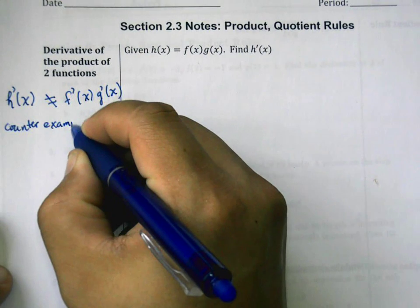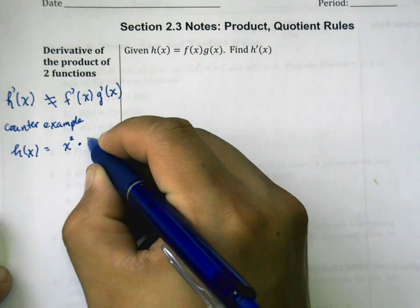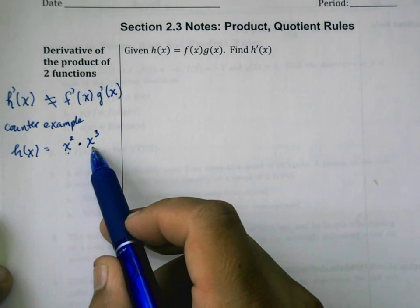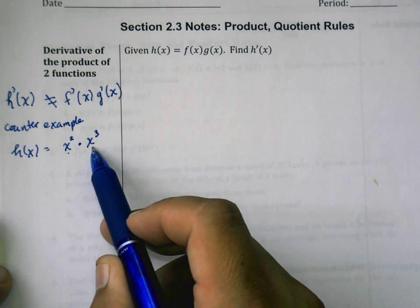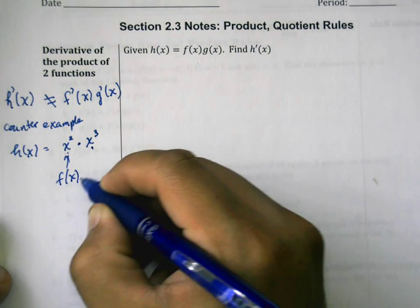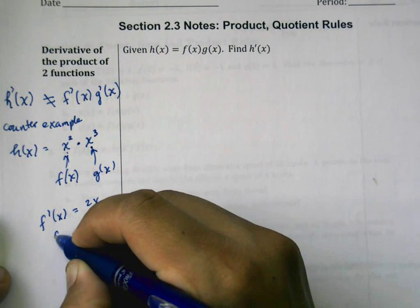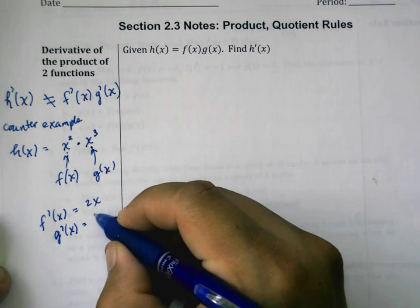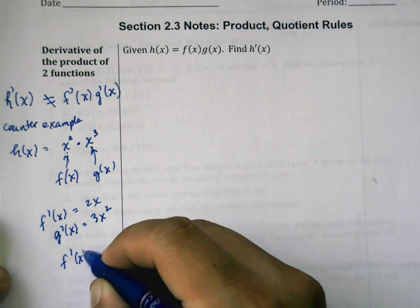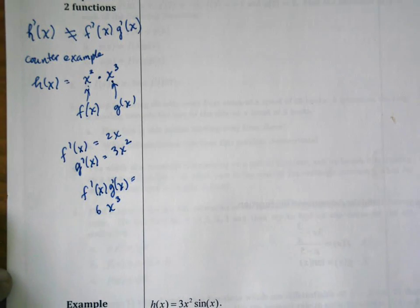If h of x was equal to x squared times x cubed, so x squared would be f and g would be x cubed. If we thought about this as f and this as g, then f prime would be 2x and g prime would be 3x squared.